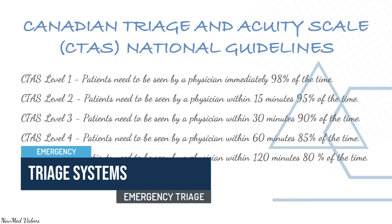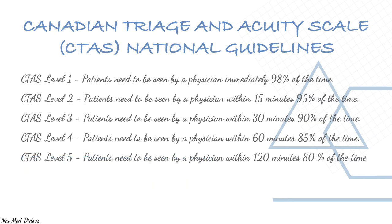The Canadian Triage and Acuity Scale (CTAS) national guidelines: Level 1 — patients need to be seen by a physician immediately, 98% of the time. Level 2 — within 15 minutes, 95% of the time. Level 3 — within 30 minutes, 90% of the time. Level 4 — within 60 minutes, 85% of the time. Level 5 — within 120 minutes, 80% of the time.